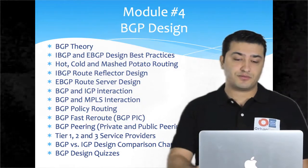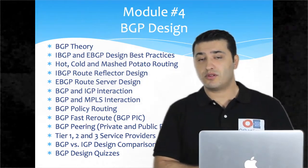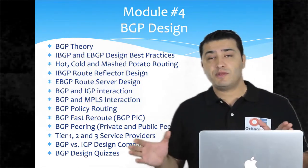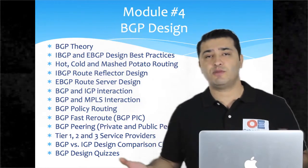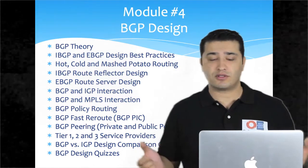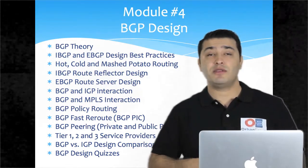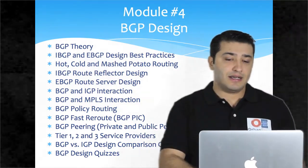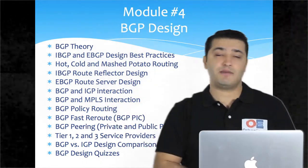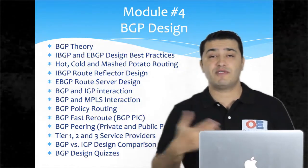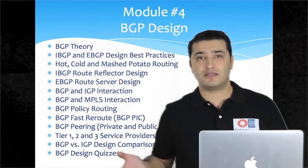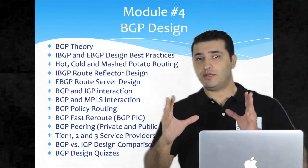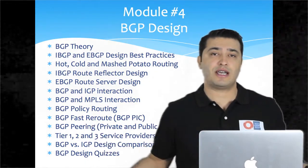Module 4 is BGP design. BGP is one of the most important technologies in the CCDE exam and in real life as a network designer. BGP theory will be the first topic, then IBGP and EBGP design principles, hot and cold potato routing, IBGP route reflector design, confederation design, EBGP route server design, BGP and IGP interaction, BGP and MPLS interaction, BGP policy routing, BGP fast reroute with prefix independent convergence, and scalability comparisons of route reflectors versus confederations.